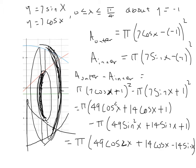We are to find the volume of the solid generated by rotating the region bounded by y equals 7 cosine x and y equals 7 sine x from 0 to π/4, and we are to rotate this about the line y equals minus 1. We have the graph of y equals 7 cosine x in blue, y equals 7 sine x in red, and the line y equals minus 1 in green. We take this region bounded from 0 to π/4 by the red and blue graphs and rotate it about the green line, winding up with a rotated solid that looks like this.